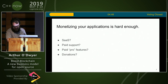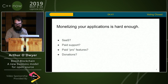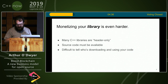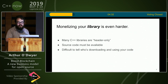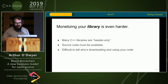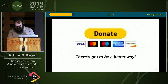Monetizing application software is hard enough. You can make a software as a service. You can make people pay for support. You can make them pay for a pro version with extra features. But if you're a library developer like many people in this room, monetizing a C++ library is even harder. A lot of C++ libraries are header-only. That means the source code has to be available. It's difficult to tell who's downloading and using your code, let alone how to get money out of them. Sure, you could put a big donate button on your website, but there's got to be a better way.